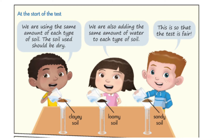The soil used should be dry. So here we have the first variable, and that is soil. Lily said: we are also adding the same amount of water to each type of soil. We have another variable here, and that is water. Tom said: this is so that the test is fair.